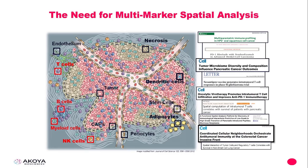Before we jump into the details of the analysis, let's first review the CODEX technology. CODEX was designed to address the need for multi-marker spatial analysis of cells and tissue. From a resource perspective, we have limited tissue samples that may make tissue biopsies the most viable option. Because of this limited sample supply, we want to extract as much information as possible out of our precious tissues. CODEX enables us to do that by assaying up to 60 markers in a single tissue in a single experiment.